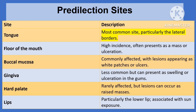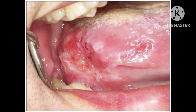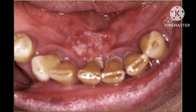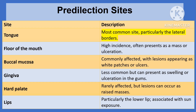Oral cancer often arises in specific sites within the oral cavity. First on our list is the tongue, which is the most common site. The particularly affected area is the lateral border, where lesions may appear as persistent ulcers or indurated masses. Due to the tongue's mobility and exposure, any suspicious lesion warrants immediate evaluation. Next is the floor of the mouth, which has a high incidence of cancer, often presenting as a mass or ulceration — lesions here can be deceptively subtle.